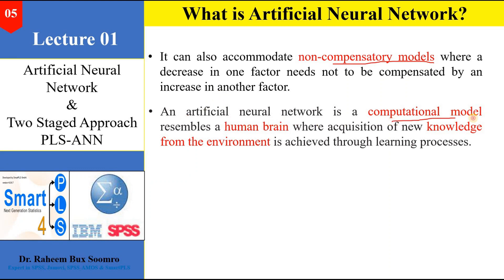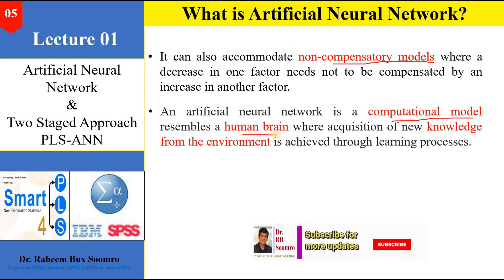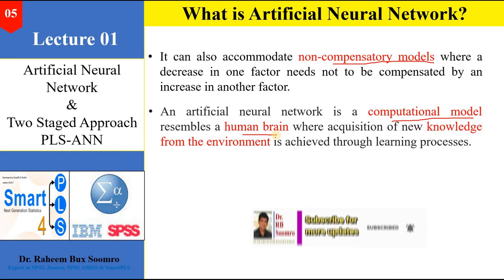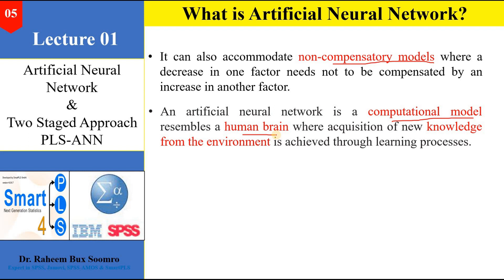Artificial neural network is a computational model resembling the human brain. It resembles how the human brain acquires new knowledge from the environment — you process that knowledge in your mind and then reach certain conclusions. The same thing is done by artificial neural networks. When you give data to the neural network, you are asking it to provide responses or conclusions from the dependent and independent variables which you are supplying to it.